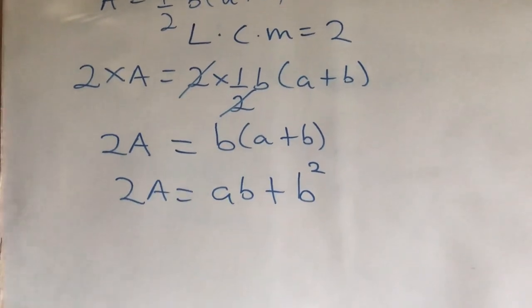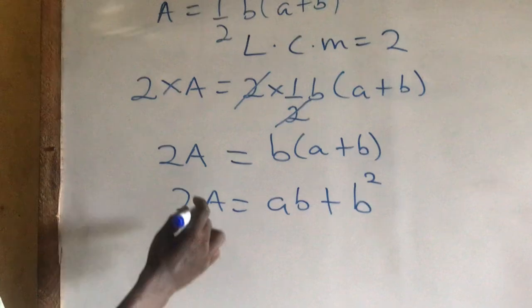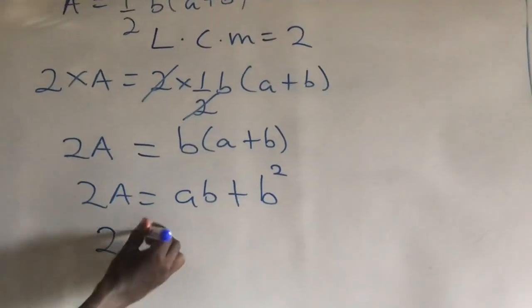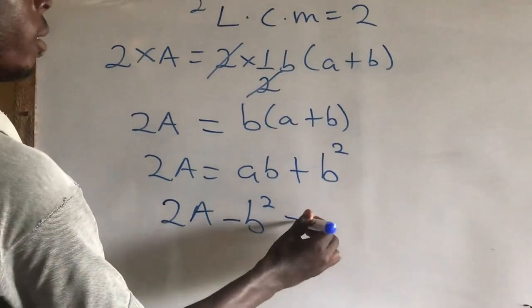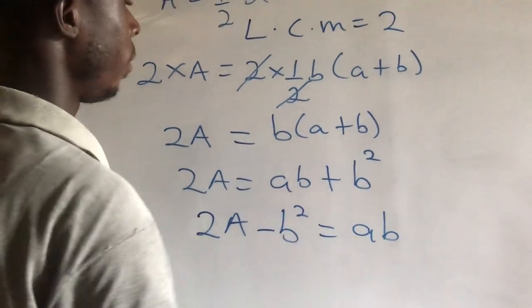We are making this small A the subject. So you move this one to the left hand side of the equation. So it becomes 2A minus B squared is equal to AB.